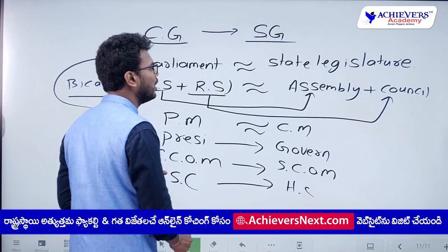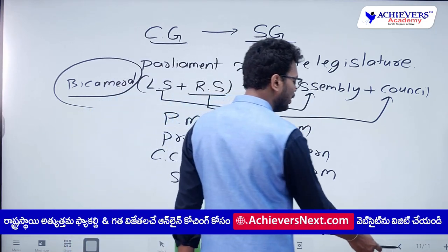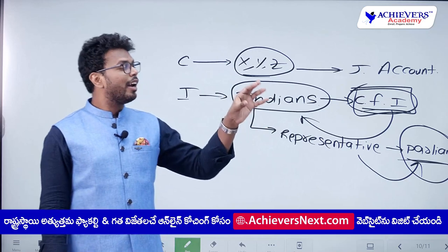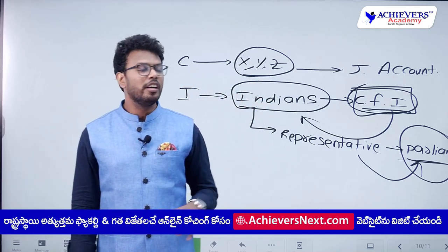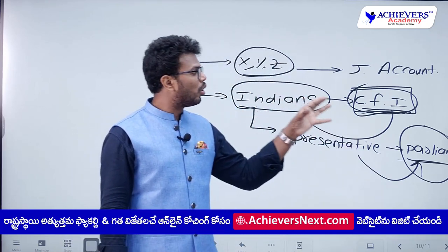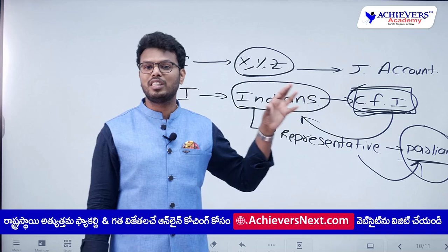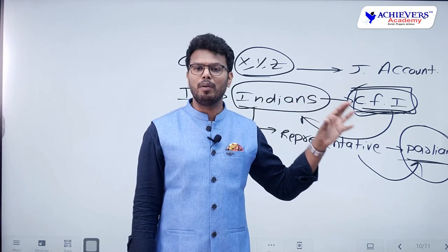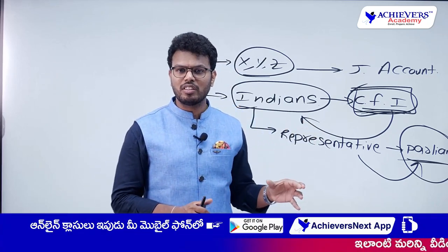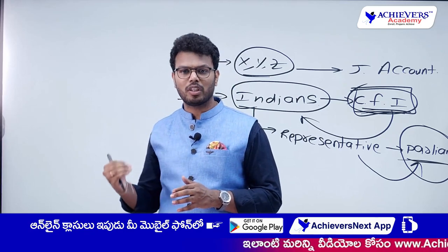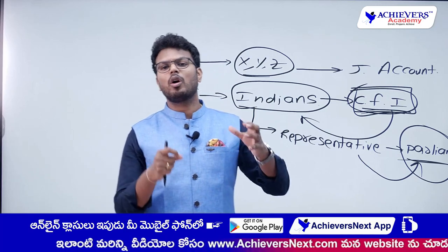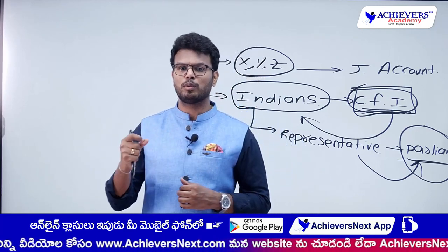The division of powers in the Seventh Schedule exists because whenever there are two organs, conflict arises — and the Seventh Schedule provides the clear-cut division to overcome it. As India is a federal state, the structure present at the center is mirrored at the state. Once we complete studying the center, we will also complete the state. I also explained why India is called an indirect democracy and why funds go into the Consolidated Fund of India, which we will discuss further under Article 266 along with the Contingency Fund of India.